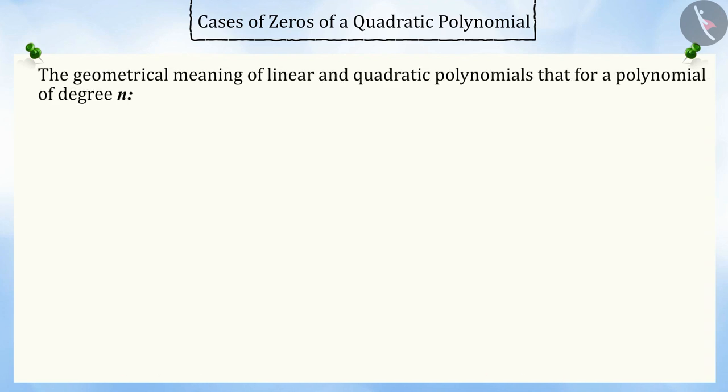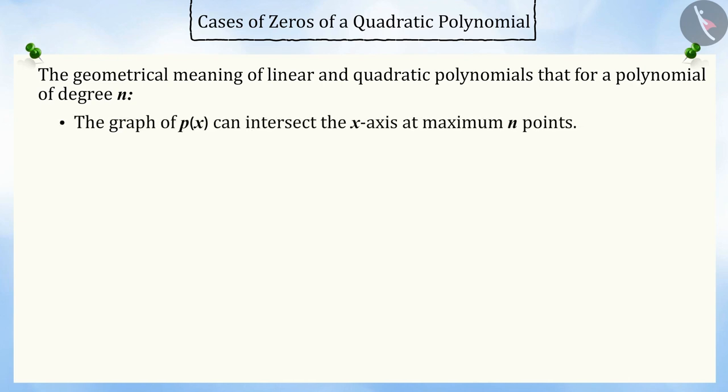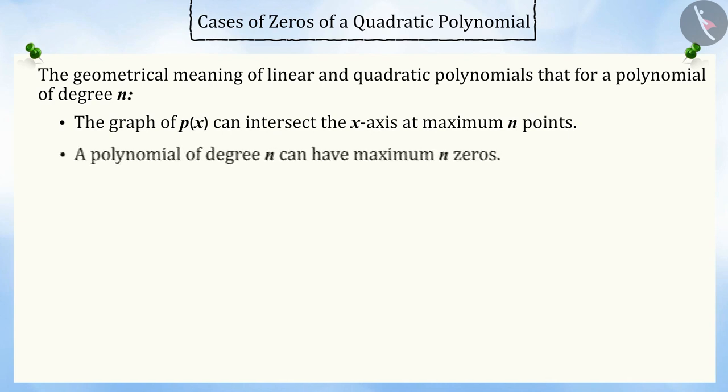It is clear from the geometrical meaning of linear and quadratic polynomials that for a polynomial of degree n, the graph of p of x can intersect the x-axis at maximum n points. Hence, a polynomial of degree n can have maximum n zeros.